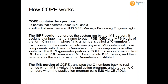Each system to be combined into one physical IMS system will have components with different C-numbers from components in other systems. The ISPF generator portion of COPE passes information from DBD source, PSB source, and MFS source into ISPF tables, then regenerates the source with the C-numbers substituted. The IMS portion of COPE translates C-numbers back to real names when IMS invokes the application program, and translates real names to C-numbers when the application calls IMS via CBLDLI.